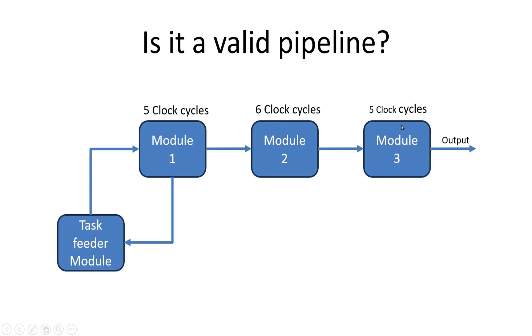Module 3 takes 5 clock cycles to complete the task. We were taking an acknowledgment from the first module and this acknowledgment was going to the task feeder module, meaning it could feed module 1 after every 5th clock cycle. But because module 2 was taking 6 clock cycles, the pipeline was getting crashed.